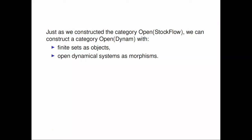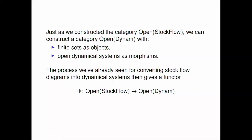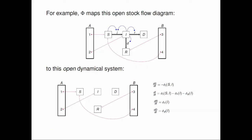Then you get this functor that turns open stock flow diagrams into open dynamical systems. If we had this open stock flow diagram, you'd get that open dynamical system — basically, don't worry about the flows and links, just tell me the differential equations. The open stock flow diagram has within it the flow functions, which were part of the data from the start. What does it mean to say this is a functor? The main thing is a functor has to preserve composition — meaning you can stick together some models and then convert them into differential equations, or convert them into differential equations and then stick those together by identifying variables. Those are the same thing.